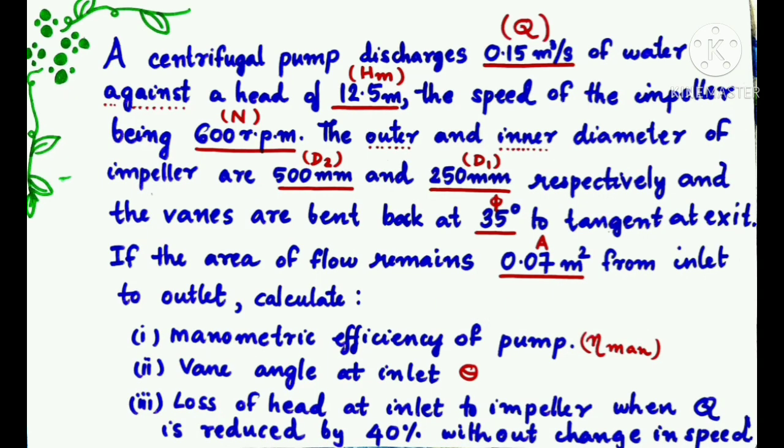A centrifugal pump discharges 0.15 m³/s of water against a head of 12.5 m, the speed of the impeller being 600 rpm. The outer and inner diameter of impeller are 500 mm and 250 mm respectively and the vanes are bent back at 35 degrees to the tangent at exit. If the area of flow remains 0.07 m² from inlet to outlet, calculate: